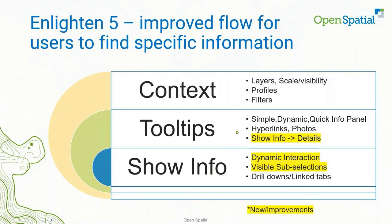Tooltips can have more than just database data — you can have hyperlinks, photos, and you can link directly into the show info panel in Enlighten. In Enlighten 5, we've changed the name of 'advanced form' to 'show info' because that's what it's doing. We've also added a function where you can put a link to the advanced form directly in the tooltip. The items highlighted in yellow are new capabilities in Enlighten 5. On the show info form, we've made it dynamic — you can have it open with nothing selected, and as you select features it'll populate and repopulate automatically.